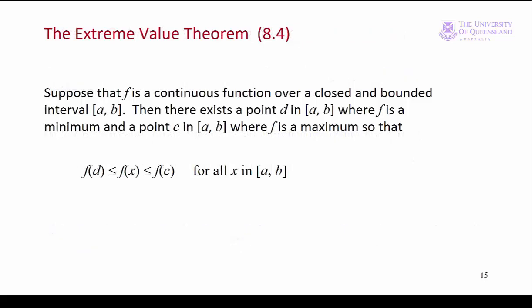So far we've just assumed that the function will have global extreme points — that's not really good enough for maths. The extreme value theorem proves that for a closed and bounded function there will be a global maximum and global minimum. As the textbook says, the proof is fairly complicated but the result is simple.